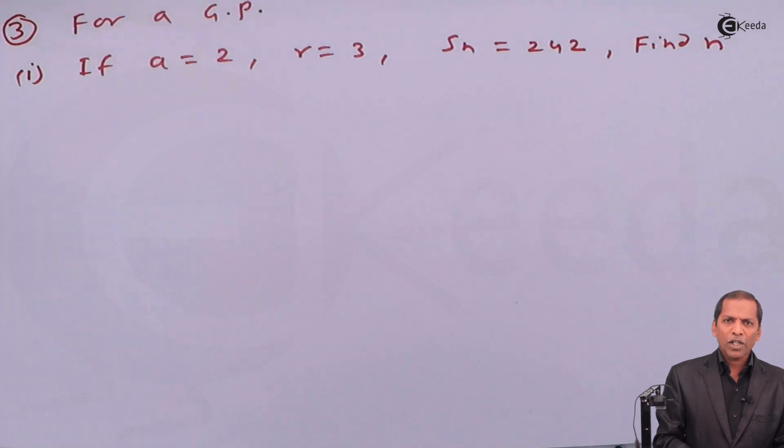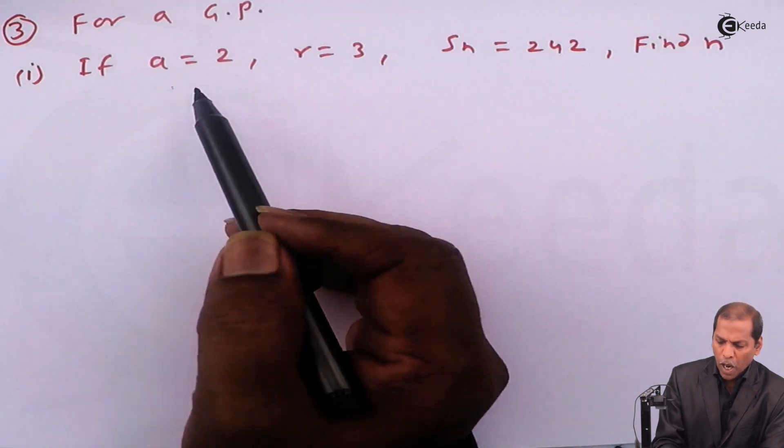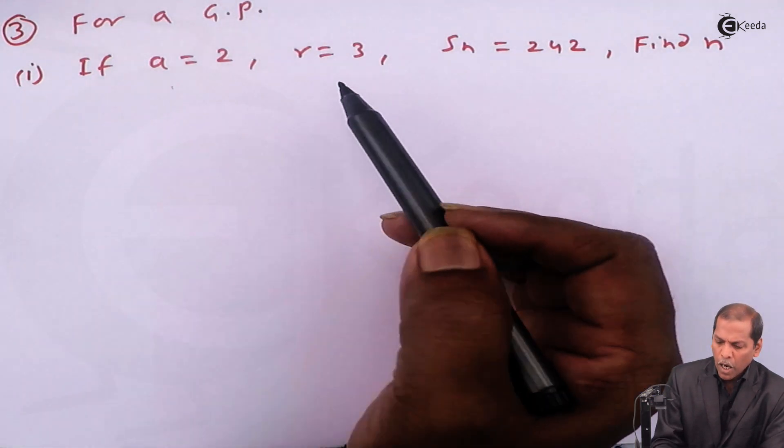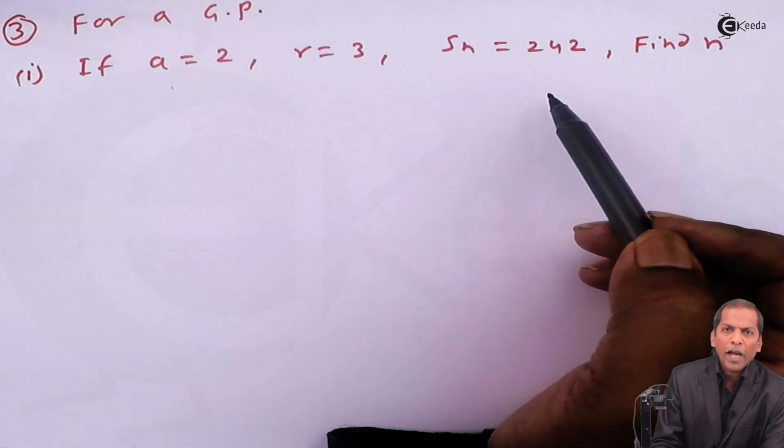The question is: for a GP, if a equals 2, r equals 3, Sn equals 242, find n.